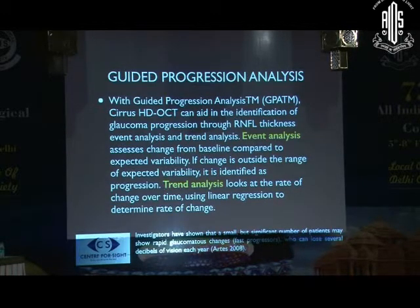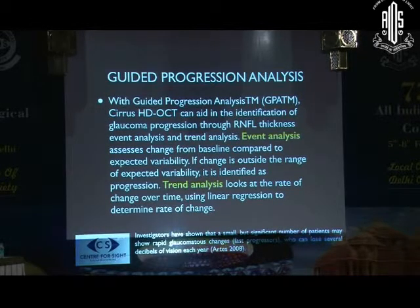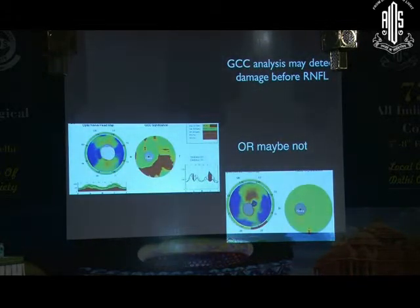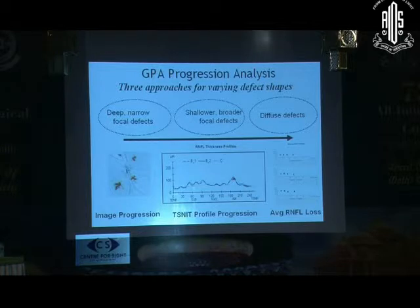The most important advantage of spectral domain OCT is to assess progression, which is defined as a change outside expected variability and is evaluated both as an event and as a trend over time. Trend analysis is very important in picking up the rate of progress, allowing you to assess whether patients are fast progressors or fairly stable. This progression may occur at the GCC or the RNFL — image progression is used to pick up deep narrow focal defects, TSNIT progression to evaluate shorter broader focal defects, and average RNFL loss to detect diffuse defects.